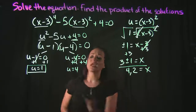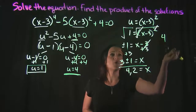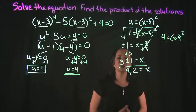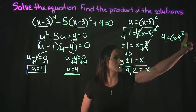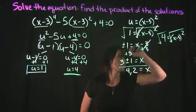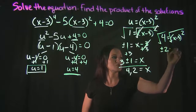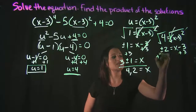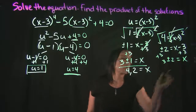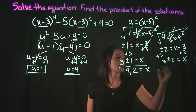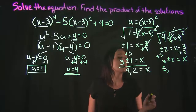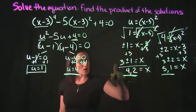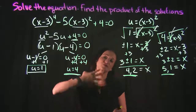Now we do the same thing with u equals 4. Substituting back: 4 equals x minus 3 squared. Taking the square root of both sides, the square root of 4 is plus or minus 2, and the square cancels leaving x minus 3. Adding 3 to both sides gives x equals 3 plus or minus 2. So our two solutions are 3 plus 2 equals 5, and 3 minus 2 equals 1. We now have four solutions: x equals 4, 2, 5, and 1.